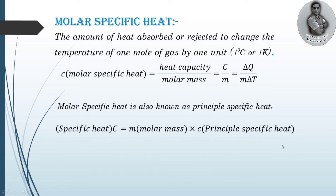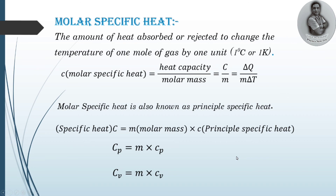Heat capacity capital C is equal to mass times small c, meaning C = molar mass × principal specific heat. This formula will be used in the next session on Mayer's relation, which is why this basic video is made. The general formula is C = m × small c. Similarly, at constant pressure: C_p = molar mass × principal specific heat at constant pressure, and C_v = molar mass × c_v. These are the formulas we will utilize in the next session. Thank you.